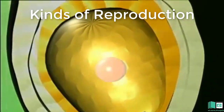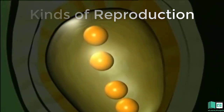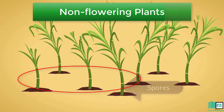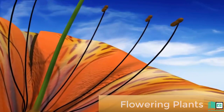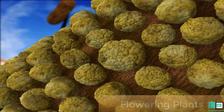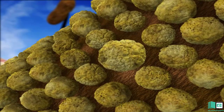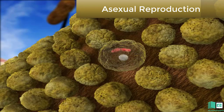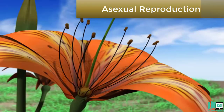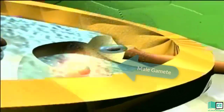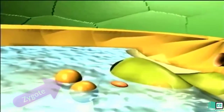Kinds of Reproduction: Plants can reproduce in different ways. Non-flowering plants reproduce by producing spores. Flowering plants produce seeds. The type of reproduction in which a cell from only one parent develops into offspring is called asexual reproduction. Various methods of asexual reproduction are commonly found in plants. When two gametes, one from each parent, combine to form a zygote, the process is called sexual reproduction.